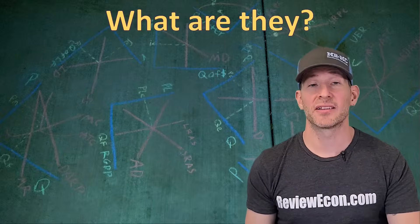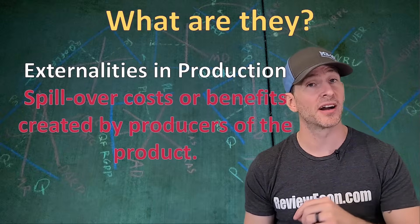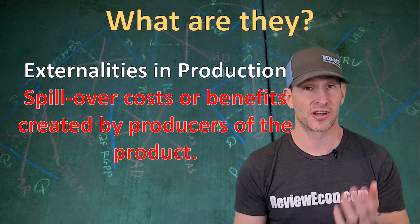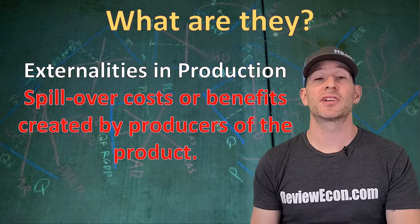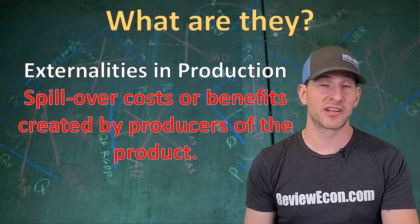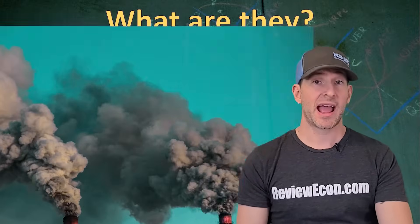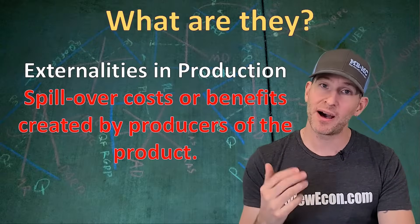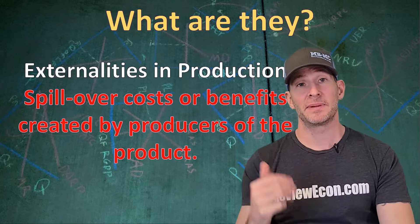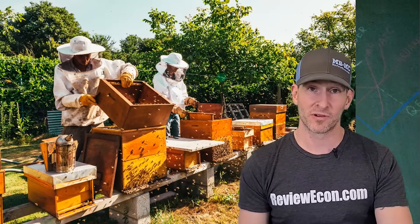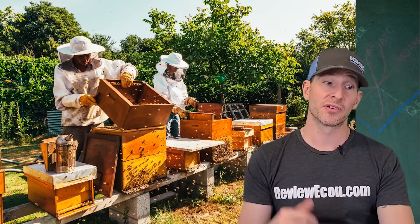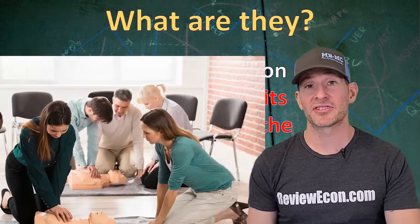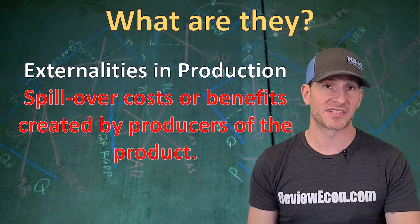We also have externalities in production — those are spillover costs or benefits created by the producers of a product. Negative externalities in production include factory pollution and pesticides used by farmers. Positive externalities in production include bees pollinating a nearby orchard as a result of producing honey, and job safety training programs that lead to greater safety for the rest of society.